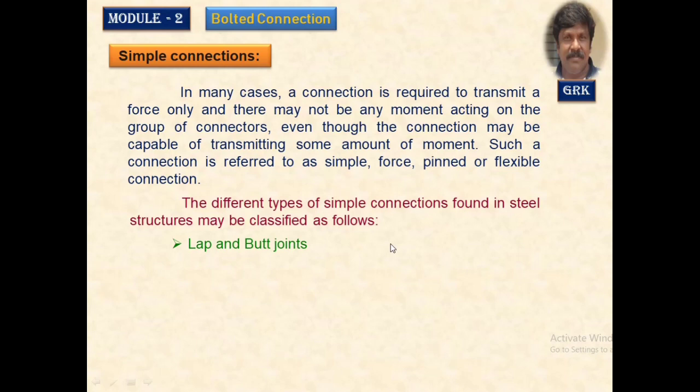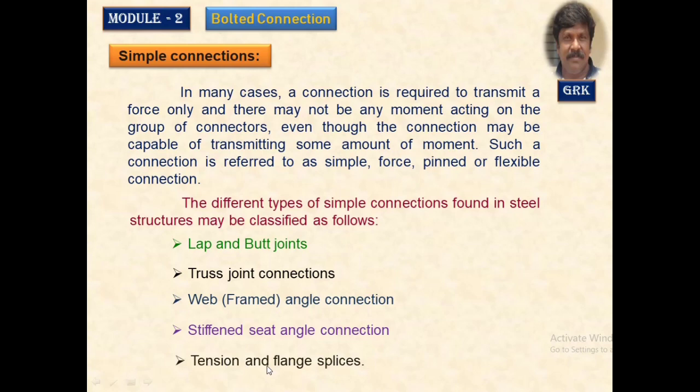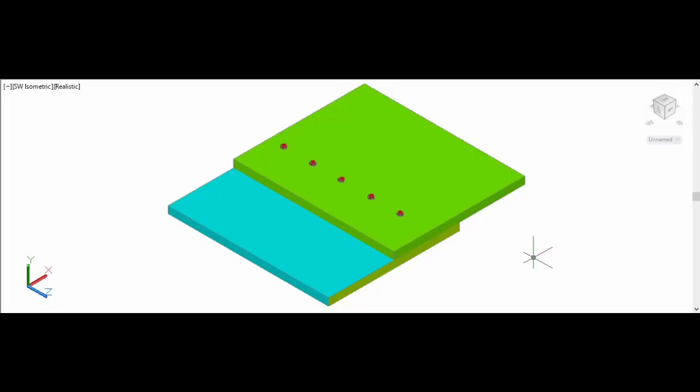The various types of simple connections are: lap joint and butt joints, truss joint connections, web frame angle connections where connections are made between beam to beam or beam to column, and the angles are provided in the web portion. We are also going to study about stiffened seated connections and unstiffened seated connections. All these types of connections will be explained with 3D models.